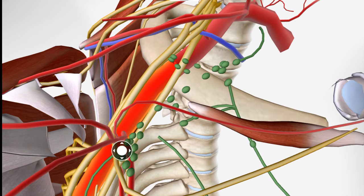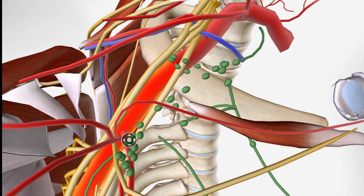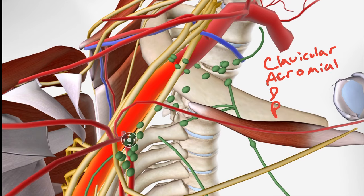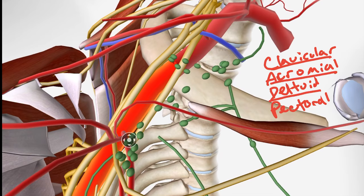Now let's move on to the thoracoacromial trunk. Another mnemonic to know is 'Cadavers Are Dead People,' representing the four branches coming off the thoracoacromial trunk: Clavicular branch, Acromial branch, Deltoid branch, and Pectoral branch. The clavicular branch goes to the clavicle, the acromial branch goes to the acromion, the deltoid branch goes to the deltoid, and the pectoral branch goes to the pectoralis muscles.